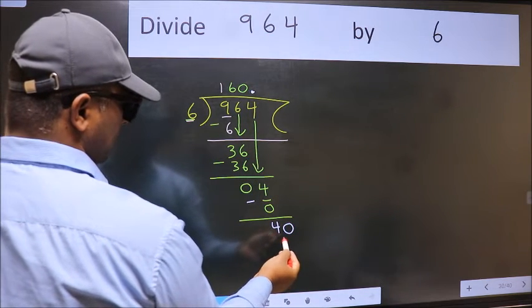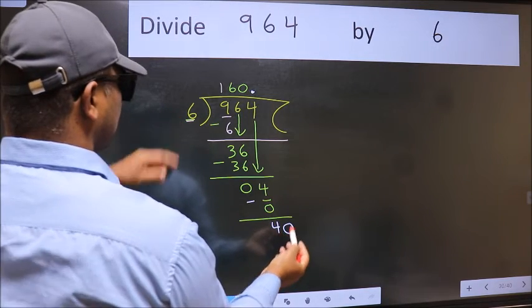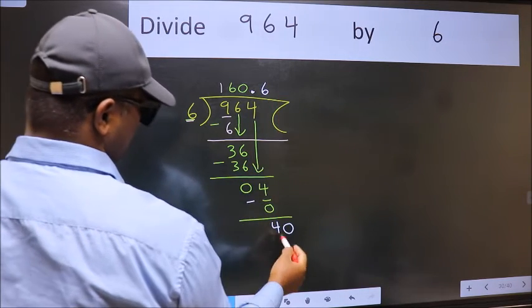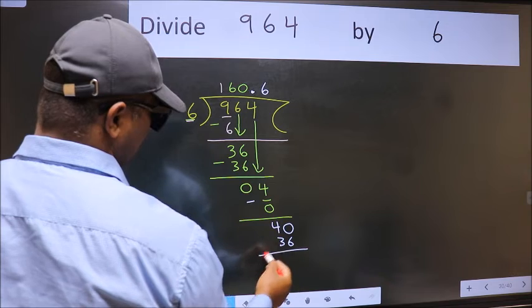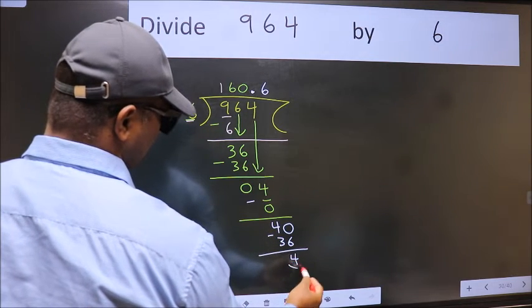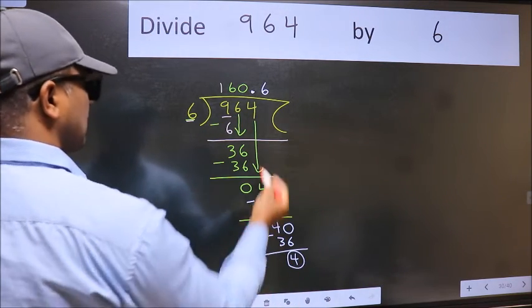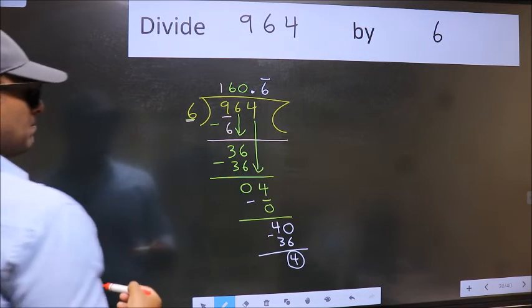So, 40. A number close to 40 in the 6 table is 6 times 6, 36. Now we subtract. We got 4 again. That means we get a bar on this number.